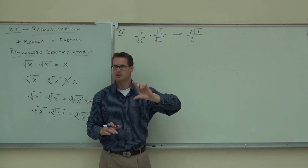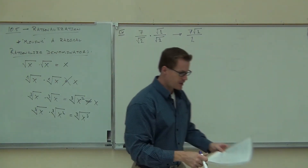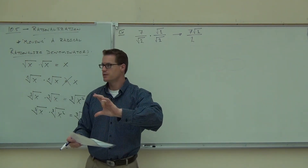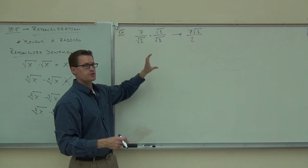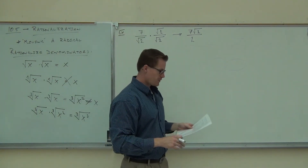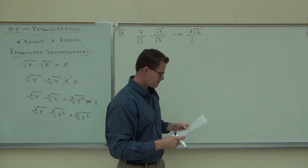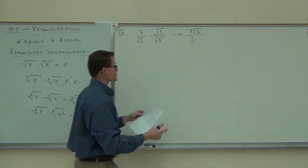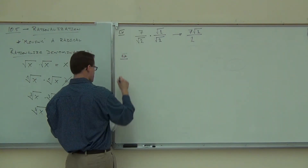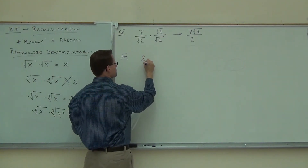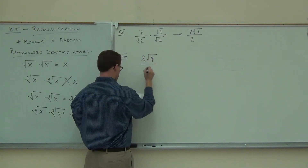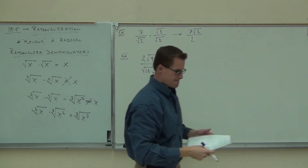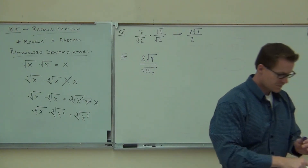To rationalize denominators, you're going to multiply both the top and the bottom of the fraction by whatever root you need — whether it's a square root or another root — to rationalize. Essentially, we're multiplying by one. Let's do a few more examples and look at how to do this with a couple different expressions.